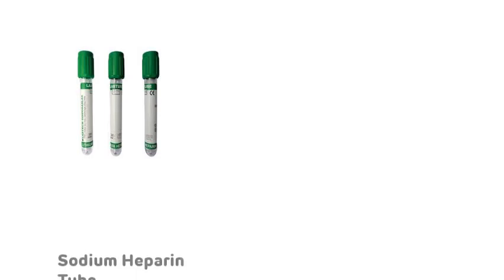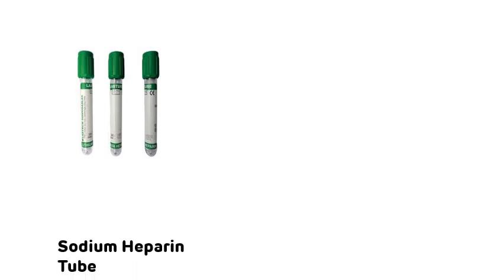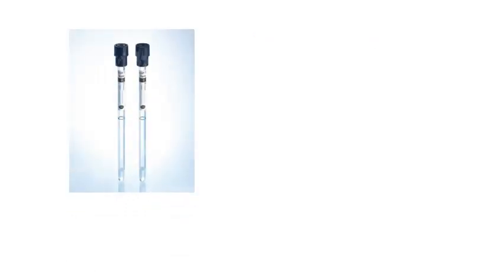The next tube is dark green in color — it is called the sodium heparin tube. The use of the sodium heparin tube is for ABG (Arterial Blood Gas analysis) and for electrolytes, which include sodium, potassium, and chloride.